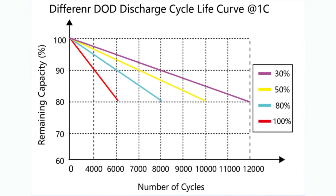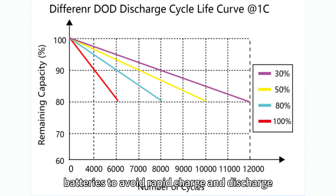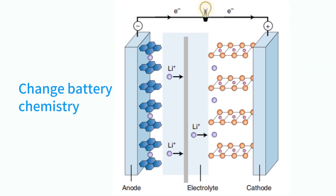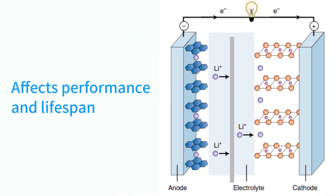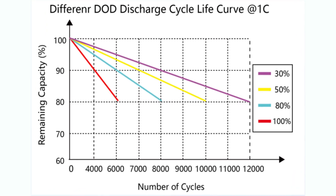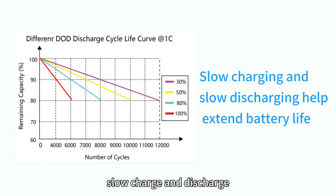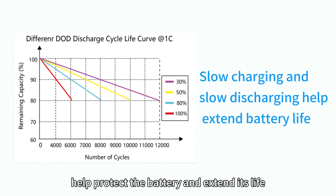It is also very important for lithium batteries to avoid rapid charge and discharge, as this may cause changes in the internal chemical structure of the battery, affecting its performance and lifespan. In general, you should discharge to 20–30% before recharging. Slow charge and discharge cycles help protect the battery and extend its life.